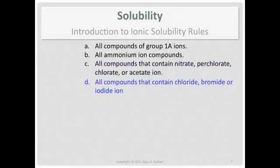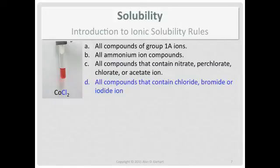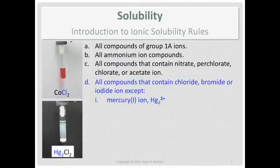Compounds that contain Chloride, Bromide, or Iodide ion are soluble — here's Cobalt-2-Chloride. Working through the list for CoCl2, you'll find a rule that covers either the Cobalt-2-ion or the Chloride ion. When you find an answer, you stop. There are some notable exceptions for the Chloride, Bromide, and Iodide rule.